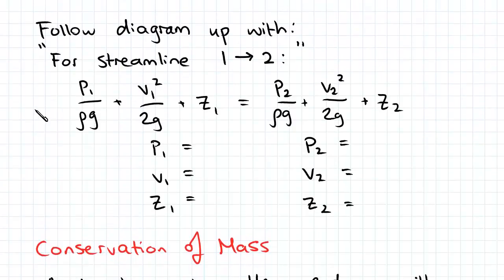Then follow up your diagram - this is just a recommendation but it's a good way to set out your working. Say 'for streamline 1 to 2' and then follow that up with the Bernoulli equation itself. Write in each of the values that you know and all your unknowns, just set it out like that. It makes it easier to mark and easier to work things out.